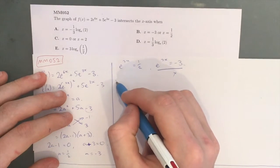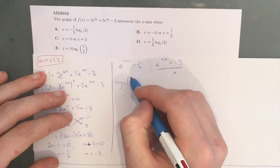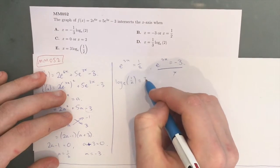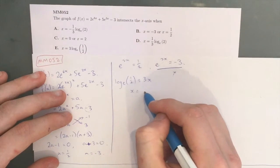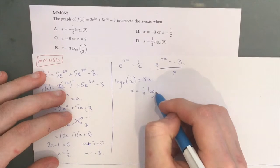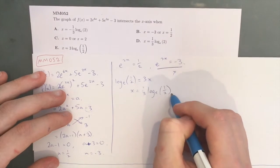Here, using our rearrangement, we get log_e(1/2) = 3x, and from there, x = (1/3)log_e(1/2).